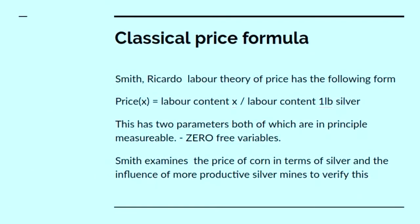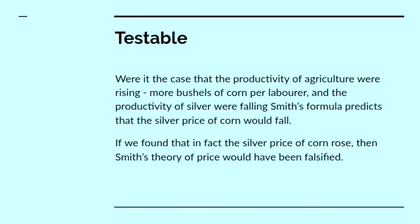Now, let's take another theory from the 18th century. The Smith Ricardo Labour Theory of Value says that the price of commodity X is given by the labour content of X divided by the labour content of a pound of silver. That's the price in terms of silver. It has only two variables, both of which are in principle measurable, and it's got zero free variables.